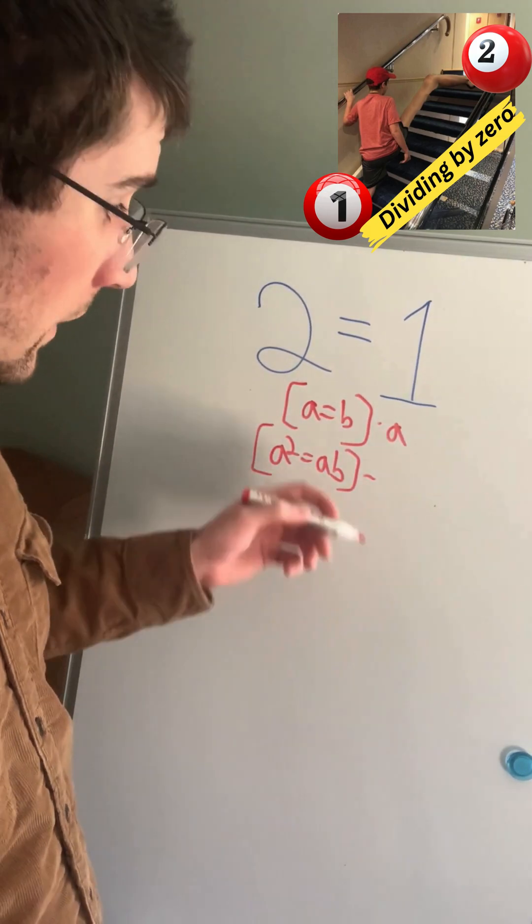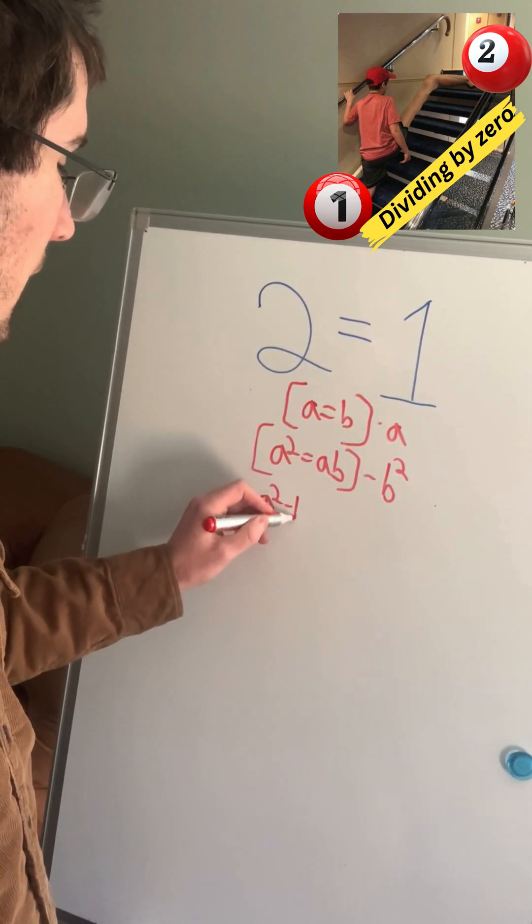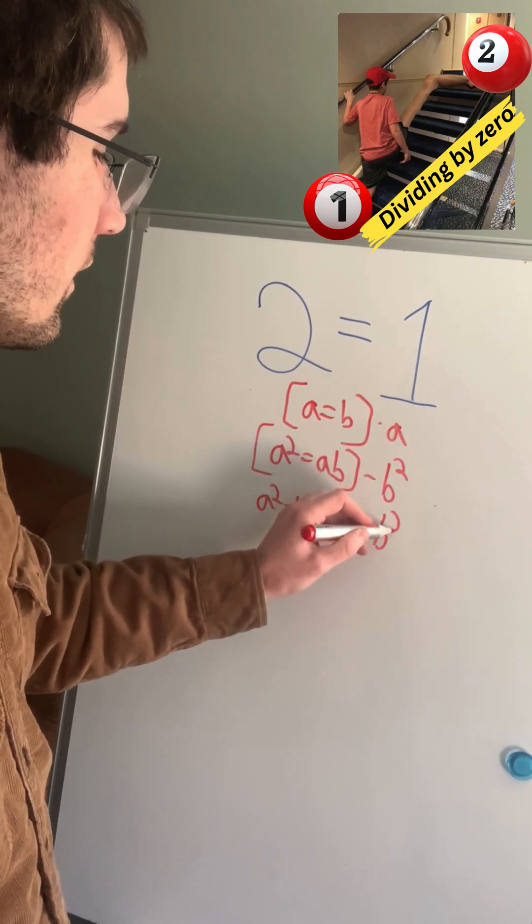Next, we're going to subtract B squared off both sides. So we'll have A squared minus B squared, and that will be equal to AB minus B squared.